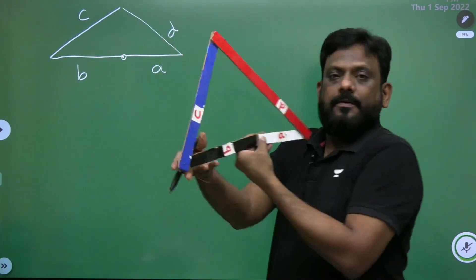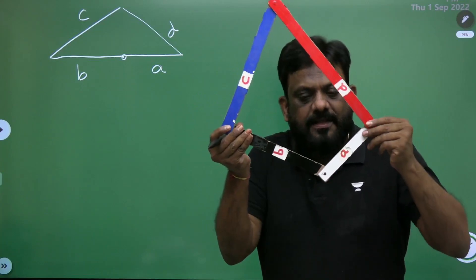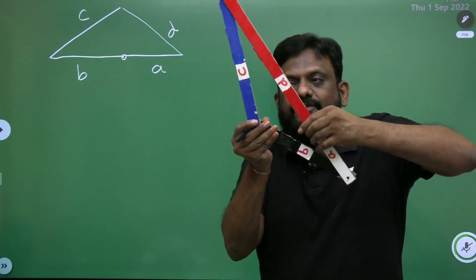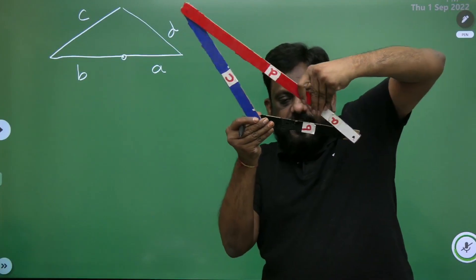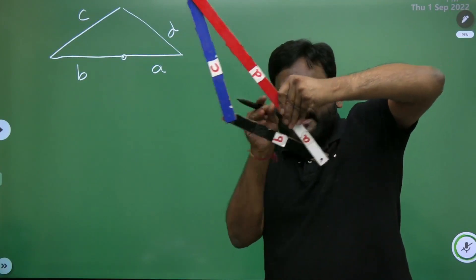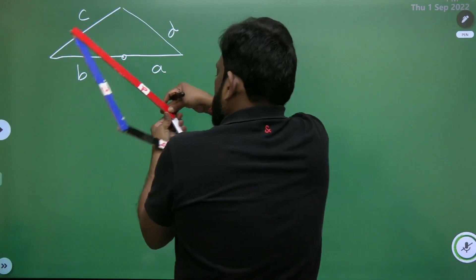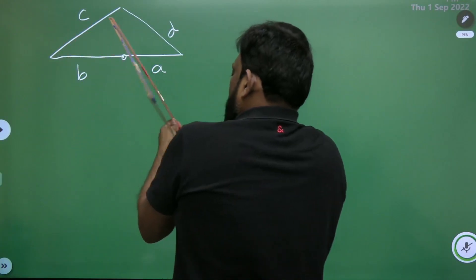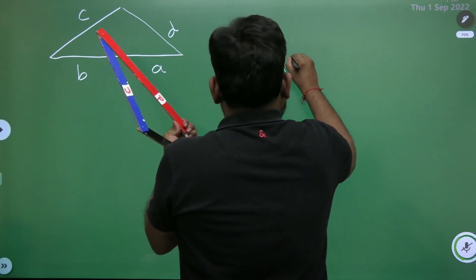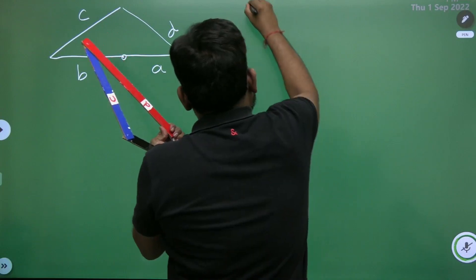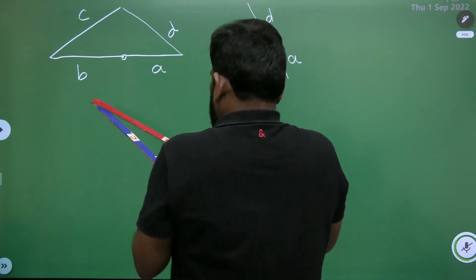Now let us track one more position. Observe here — this is one more triangle. Let me show this very clearly. This is one more triangle: this is A, this is D, then we have B and we have C.